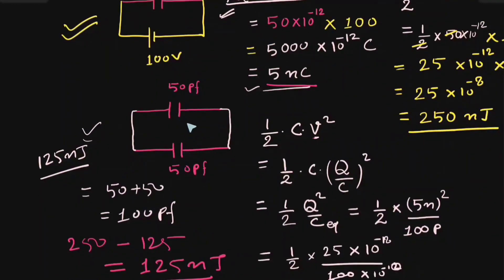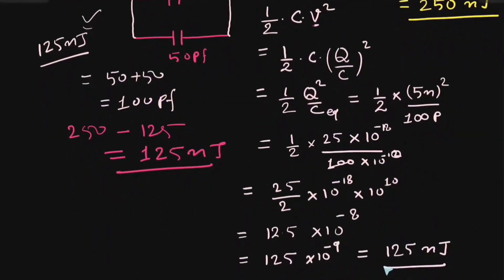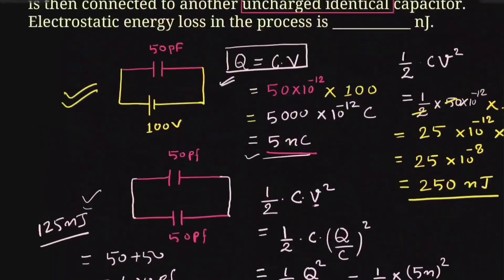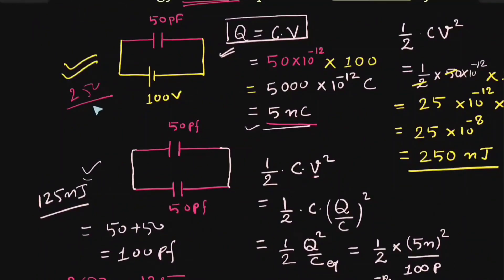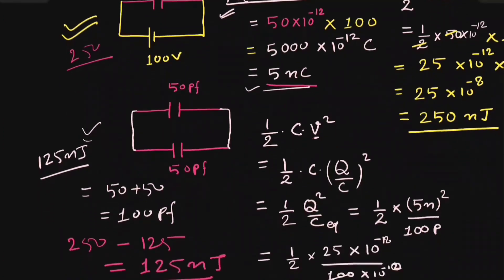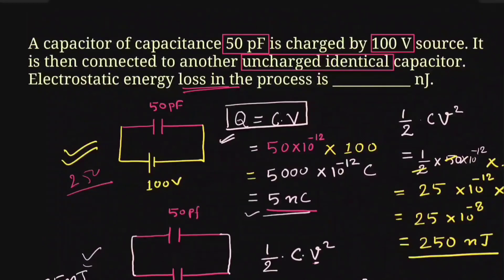Both capacitors are connected in parallel, so the equivalent capacitance is 100 picofarad. Putting the value of Q as 5 nano coulomb and C equivalent as 100 picofarad into half Q squared upon C equivalent, the energy of the combined system comes out to be 125 nano joule. The electrostatic energy loss is 250 minus 125, equal to 125 nano joule. Thank you for watching; if you still have any doubt, please let me know in the comment section.